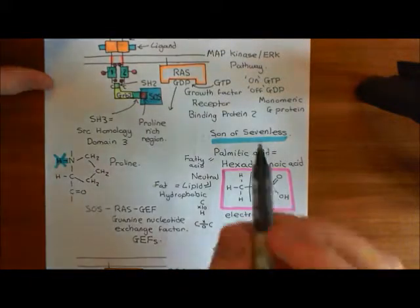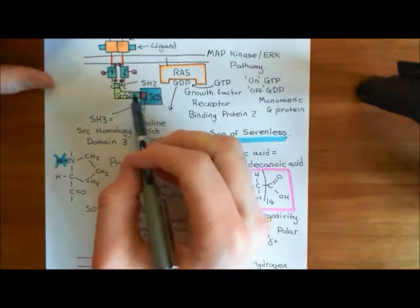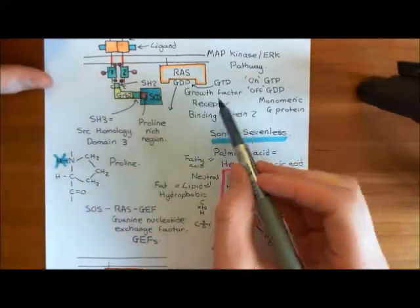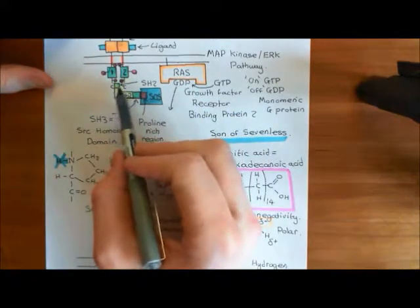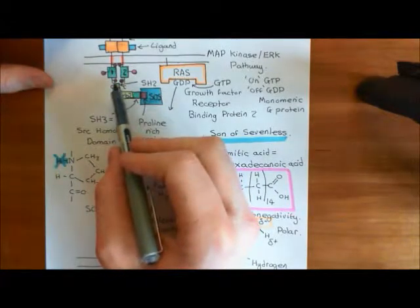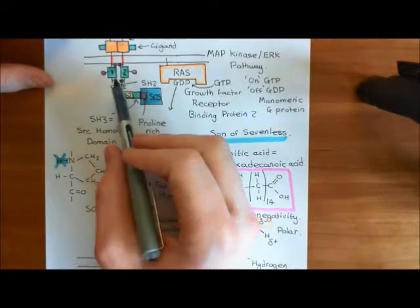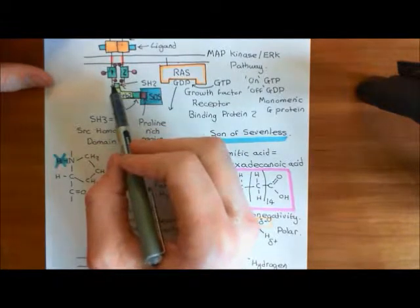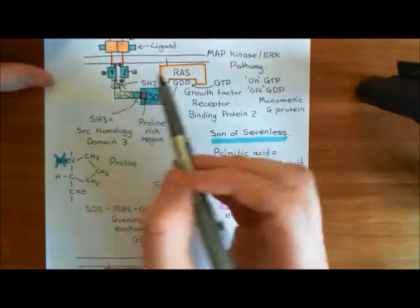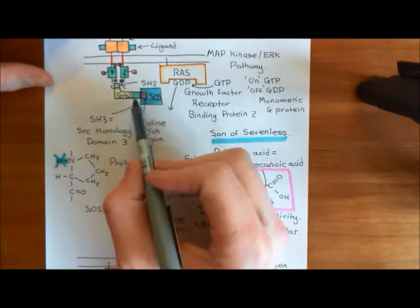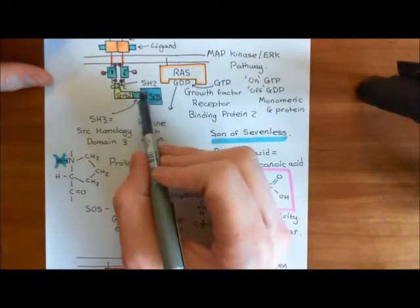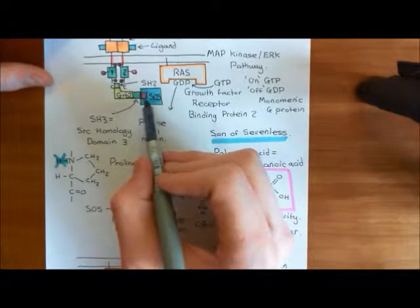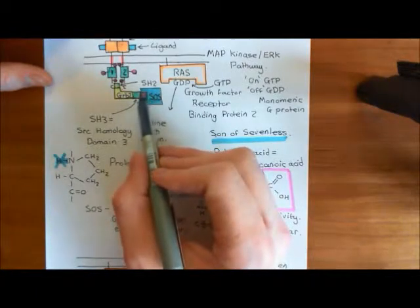So I'll just remind you where we've got to so far. We started off with this protein GRB2, which stands for growth factor receptor binding protein 2, which has an SH2 domain. This SH2 domain will bind to phosphotyrosine residues on the cytoplasmic tails of these receptor tyrosine kinases. GRB2 also has another important domain known as the SH3 domain, or src homology domain 3, which is capable of binding to an area rich in proline residues.